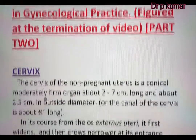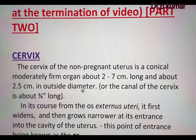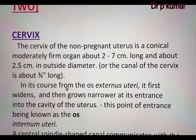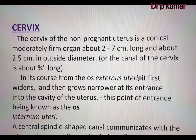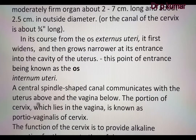The cervix of the non-pregnant uterus is a conical, moderately firm organ, about 2 to 7 cm long and about 2.5 cm wide. In its course from the os externus uteri, it first widens, then grows narrower at its entrance into the cavity of the uterus, this point of entrance being known as the os internum uteri. A central spinal shaft canal communicates with the uterus above and the vagina below.